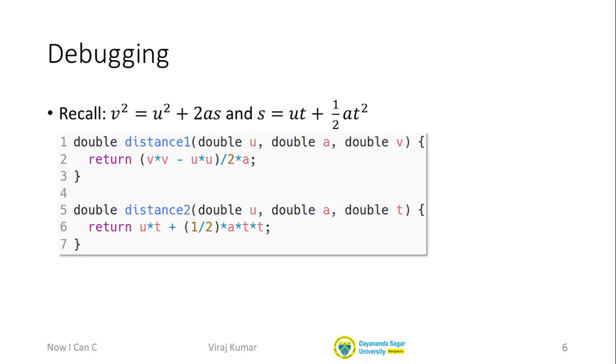Now notice the rules of C programming - you have to follow these rules. Even though all three variables are of the same type, you have to separately specify the type. So I have to say, on line one, double u comma double a comma double v. I can't say double u comma a comma v or something like that - that's illegal C code. The language says that if you have multiple arguments, then you must give a type for each one of them, even if that type is common amongst all the arguments.